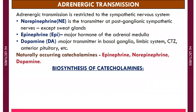Adrenergic transmission is going to occur only in the sympathetic nervous system. In this nervous system, the main neurotransmitter or the principal neurotransmitter is norepinephrine. Epinephrine, norepinephrine — which is also known as adrenaline — noradrenaline, and dopamine are together known as catecholamines.